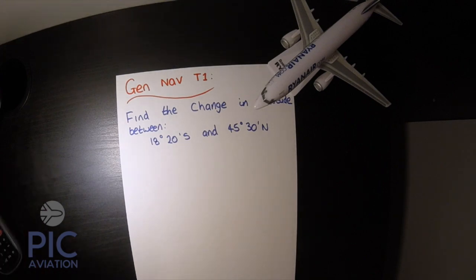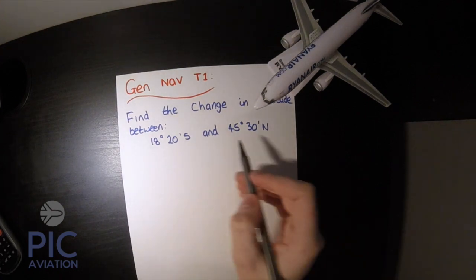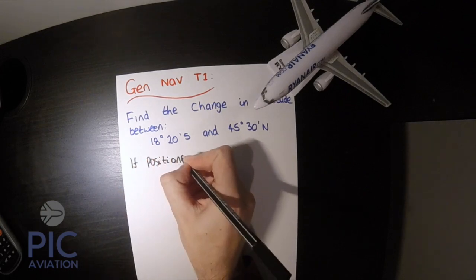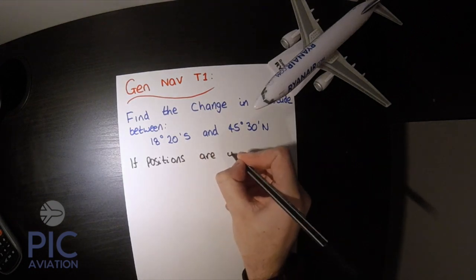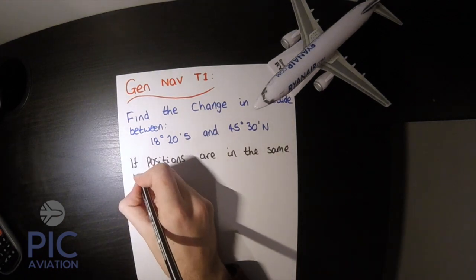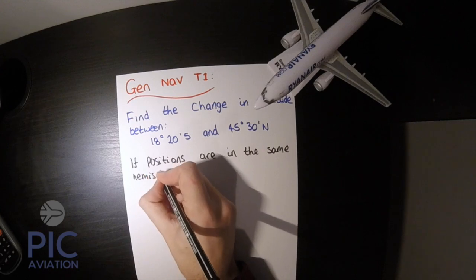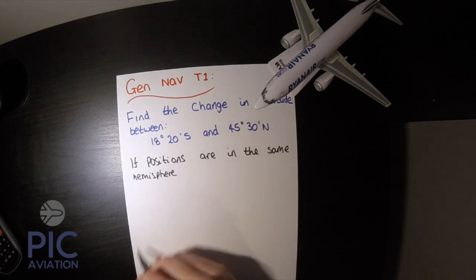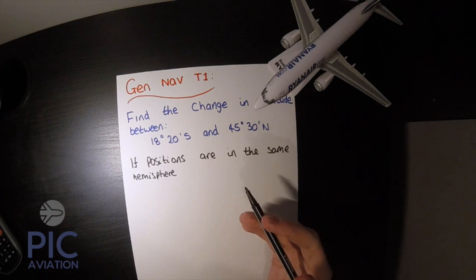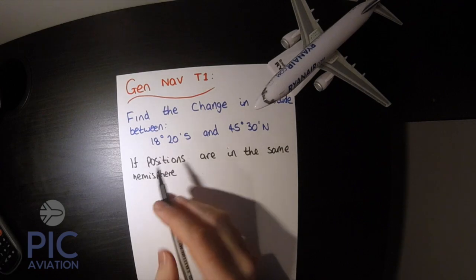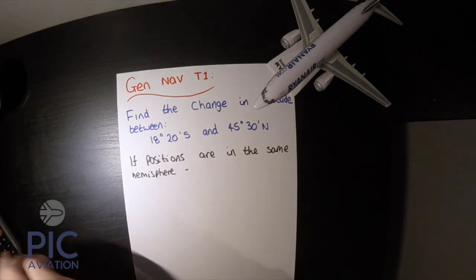The first thing we must understand with these calculations is that if our positions are in the same hemisphere — i.e. both in the southern hemisphere — then we must subtract one from the other. Noting with basic maths, we must subtract the smaller number from the bigger number. So if the positions are in the same hemisphere, we are going to subtract.